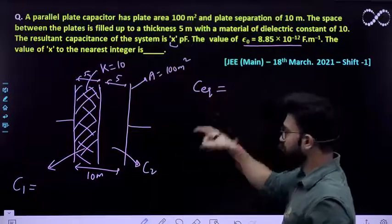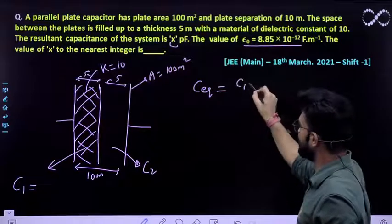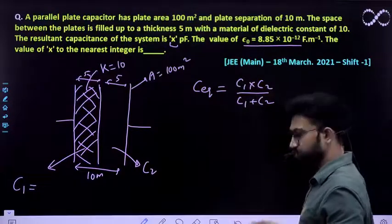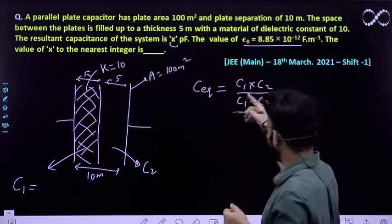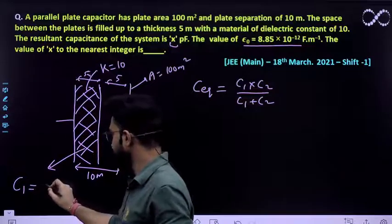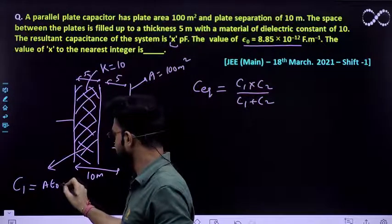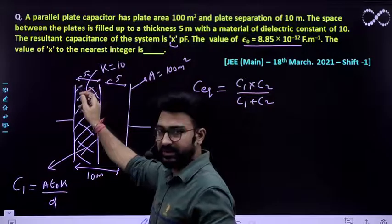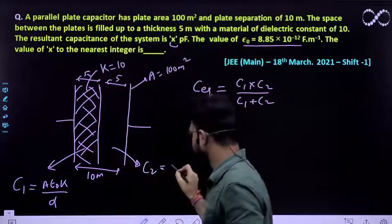Toh effective capacitance, in dono ka series combination kitna hota hai? c1 into c2 divided by c1 plus c2. Toh c1 into c2 divided by c1 plus c2, and what is c1 over here? We already know that A epsilon naught k by d and d is 5 meter over here.